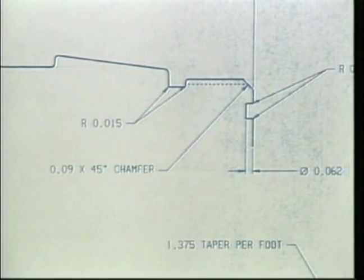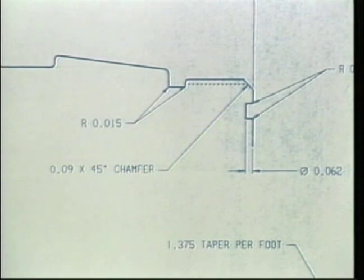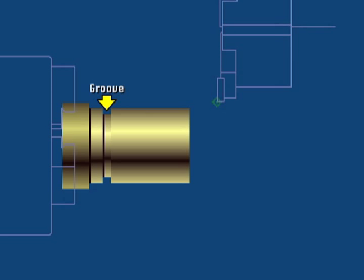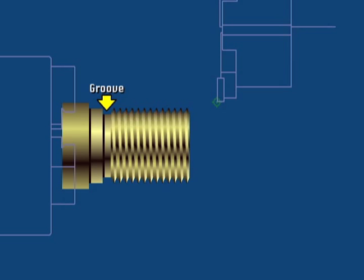Features which include a chamfer or radius are normally included in both the rough and finished machining operations of Mazak programs. Grooves that are required for other machining operations, such as grooving the end of an OD section which will later be threaded, should also be performed as part of the rough.